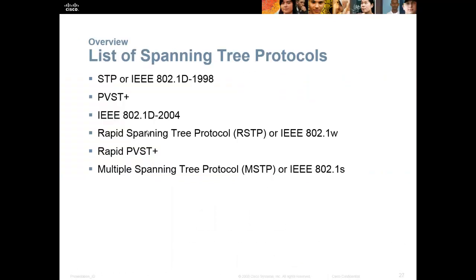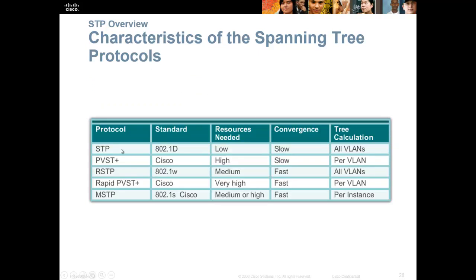Spanning tree varieties: spanning tree is 802.1D. There's per-VLAN spanning tree plus, rapid spanning tree protocol which Cisco does not support, rapid per-VLAN spanning tree which Cisco does support, and multiple spanning tree protocol. By default, Cisco switches have spanning tree running. Your real other option is rapid per-VLAN spanning tree, which is Cisco proprietary and requires more resources. It runs fast spanning tree with only three port states instead of five, and has one instance per VLAN. So if you've got 20 VLANs, you're running 20 instances of spanning tree simultaneously.